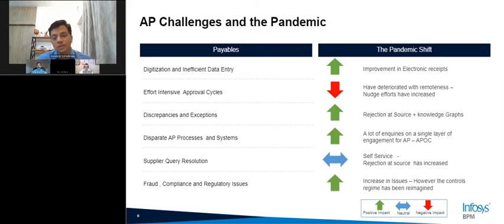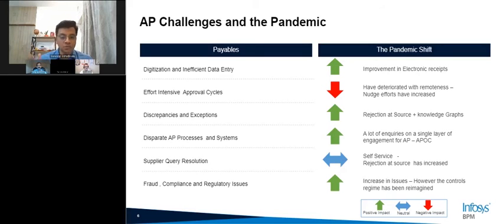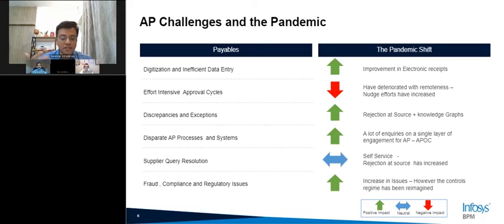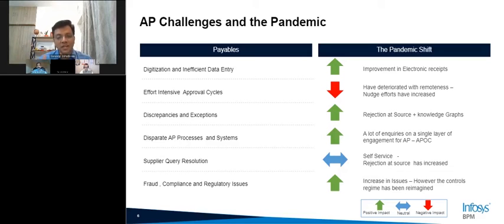The second big problem is effort-intensive approval cycles. There are two fundamental issues: first, the time and effort it takes to route invoices to approvers; second, the time it takes to get an invoice approved once it reaches an approver. Some data facts: 50% of invoices get approved within two business days — that's great. But 10% of invoices take more than 10 days. In a 30-day cycle, that's 10% of invoices stuck in various approval stages. The pandemic has negatively influenced this — our nudge rates, which are technology pushes to get approvers to respond, have almost doubled in terms of effort.